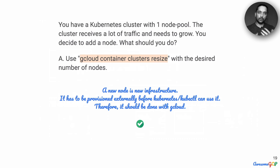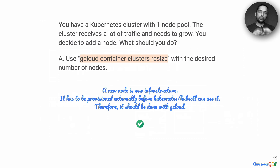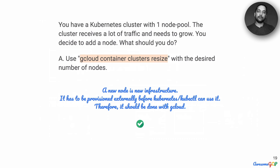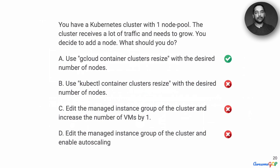Alice, who has worked with kubectl for a bit, now has a suggestion that works for us: use gcloud container clusters resize. A new node is new infrastructure. That new infrastructure has to be provisioned and provided to kubectl before it can work with it. Therefore, this task should be done with gcloud, and therefore option A is the right answer.